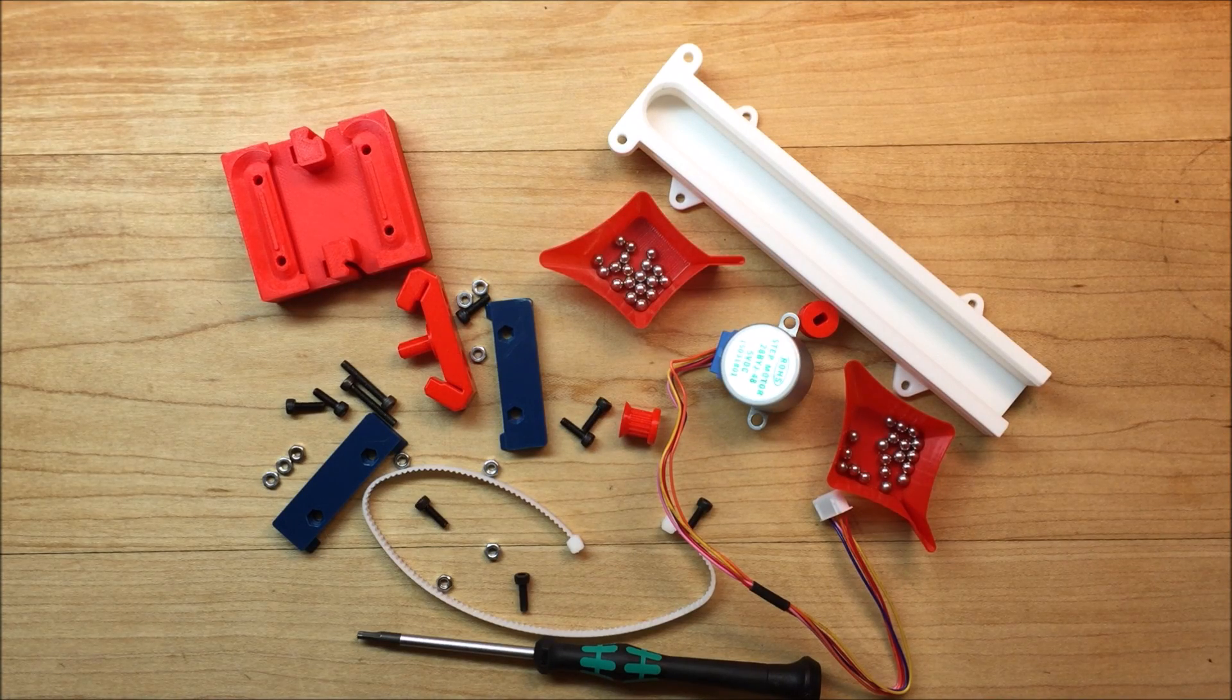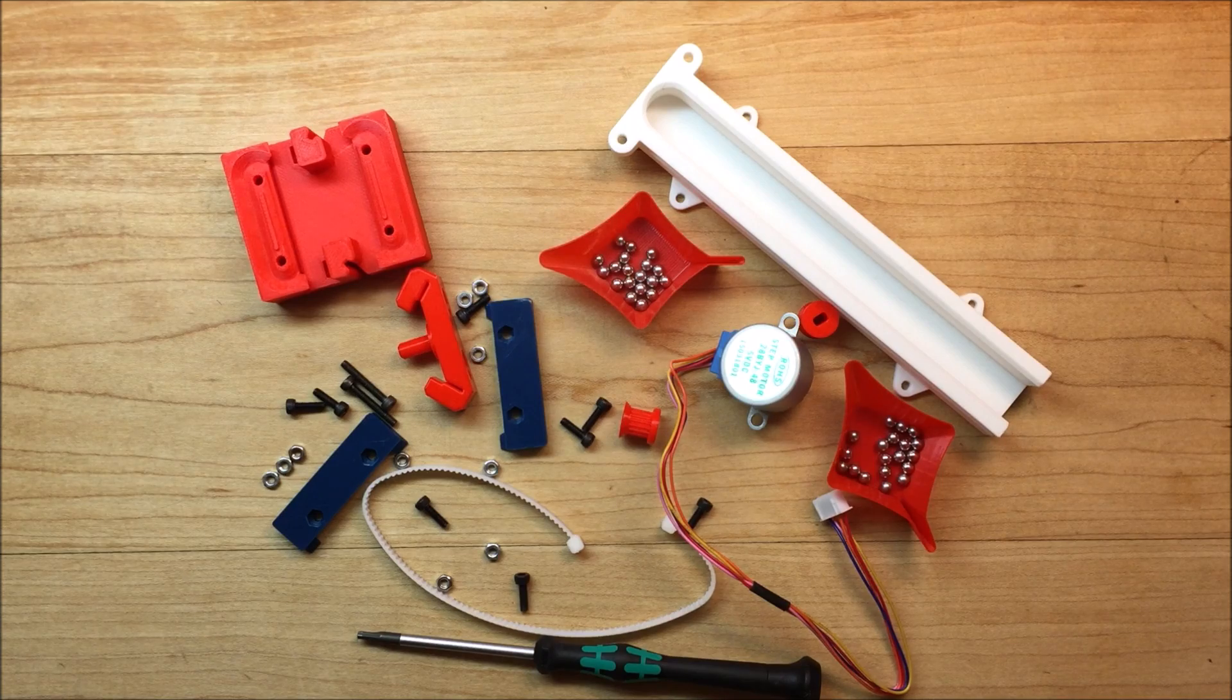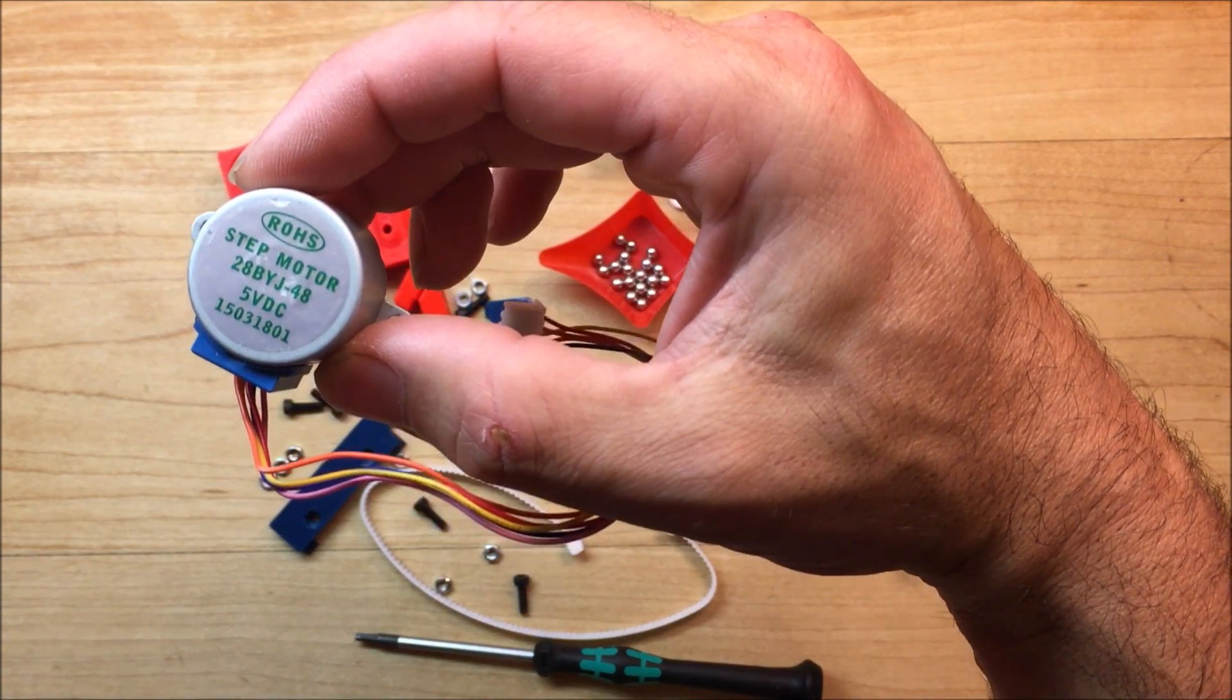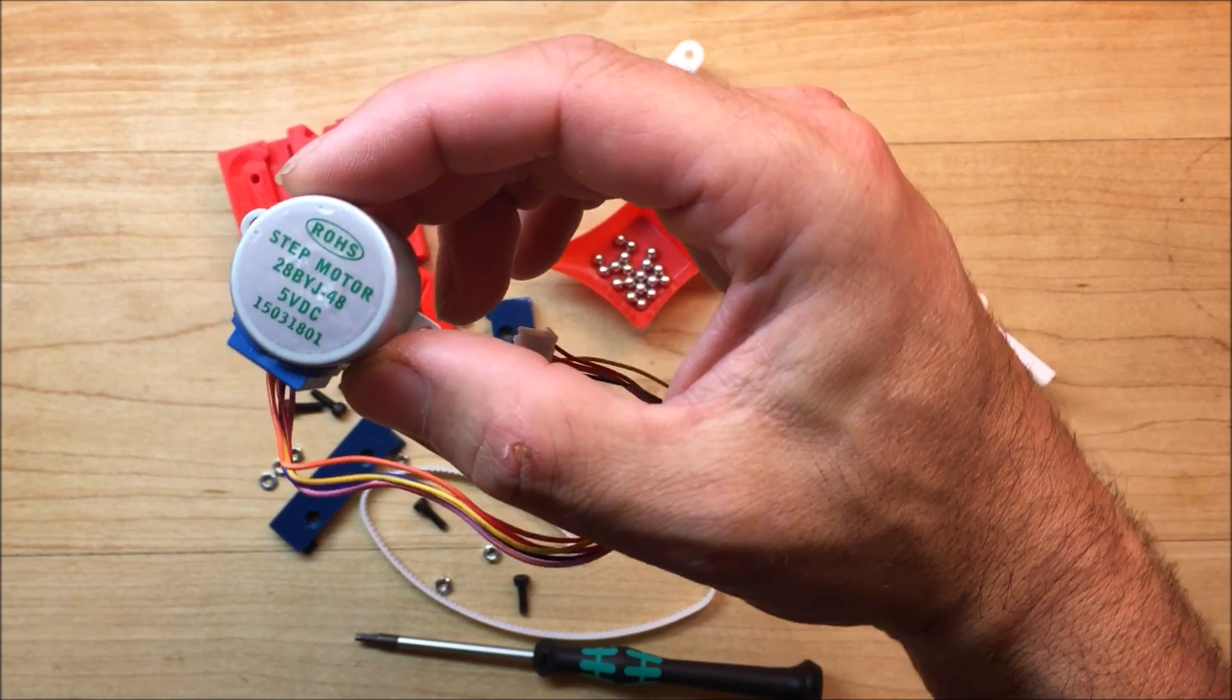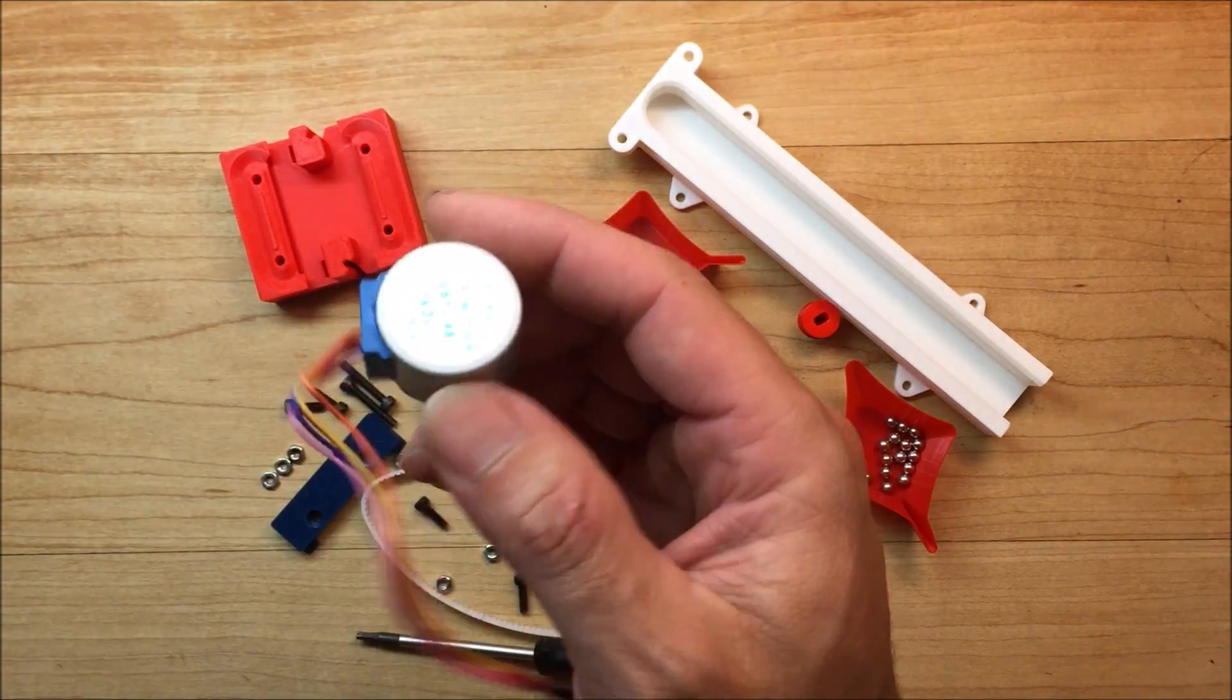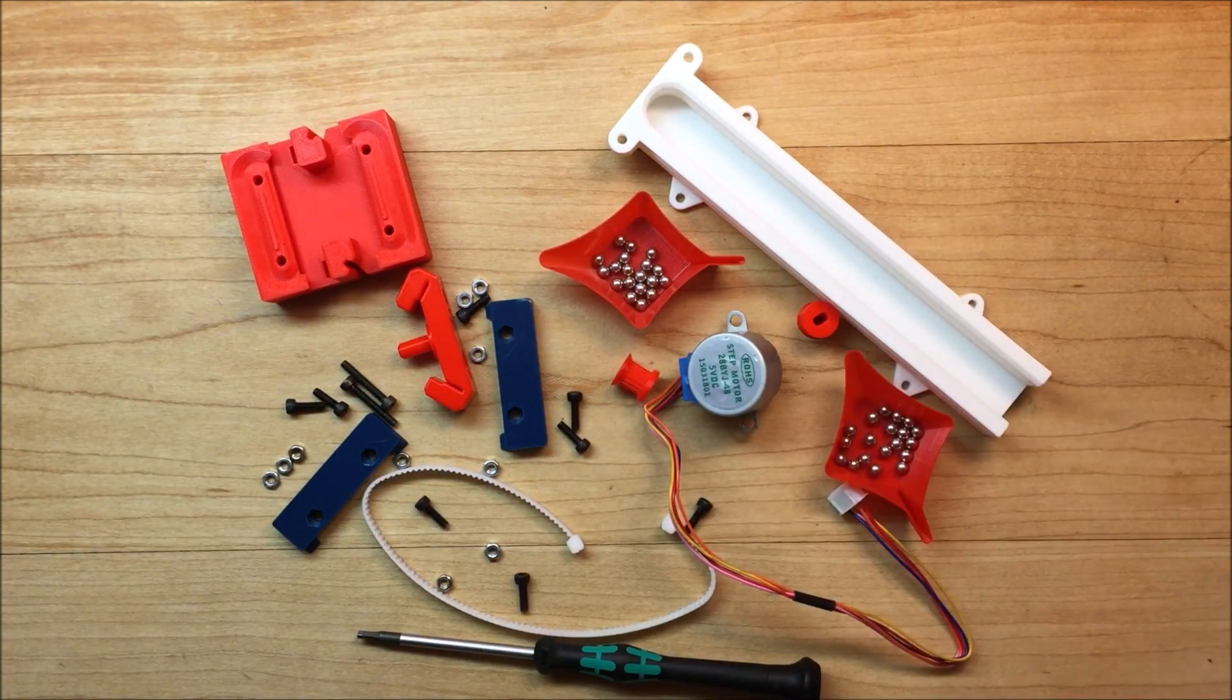In this video I'm going to show you guys how to assemble this linear belt slide. It uses a 28 BYJ-48 stepper motor. These are the motors commonly found in Arduino kits. You can buy them on eBay for about a dollar.